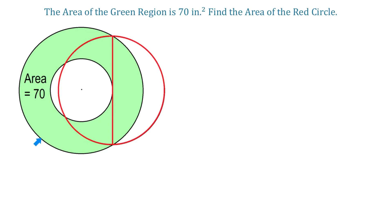In this figure, we have two concentric circles, and the area of the green region formed between these two circles is 70 square inches. We also have another red circle, whose diameter is tangent to the smaller circle, and the endpoints of the diameter lie on the larger circle.